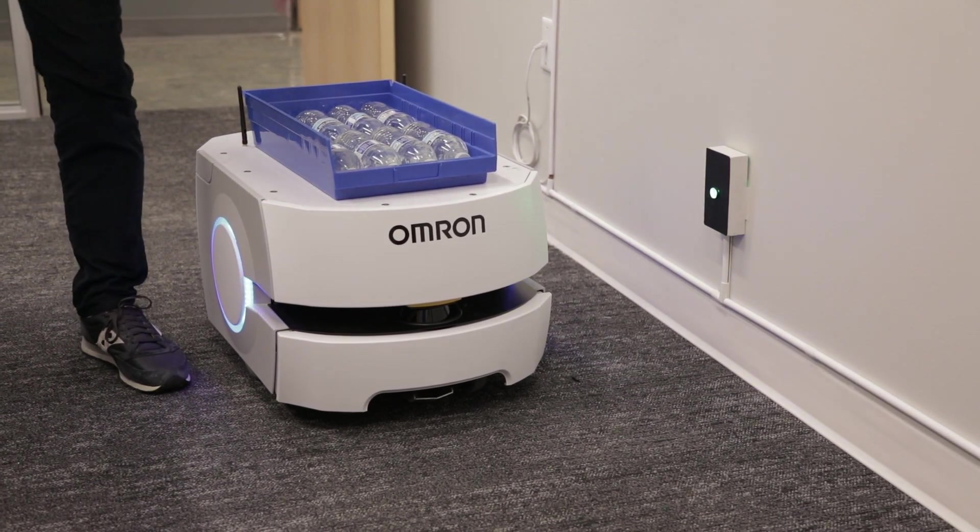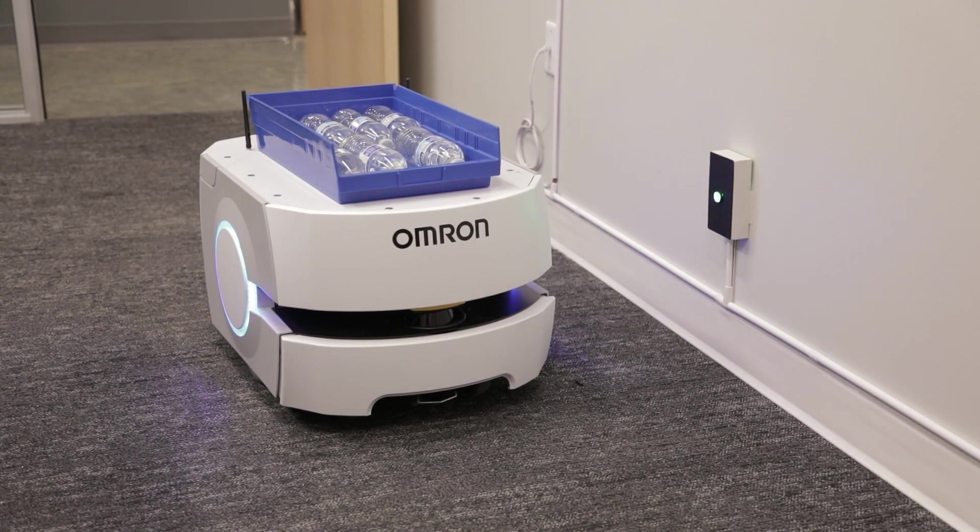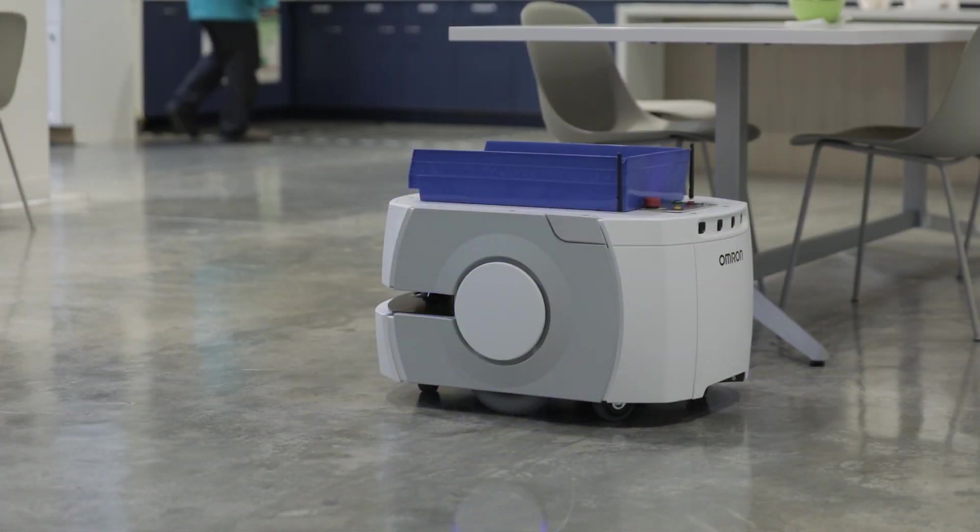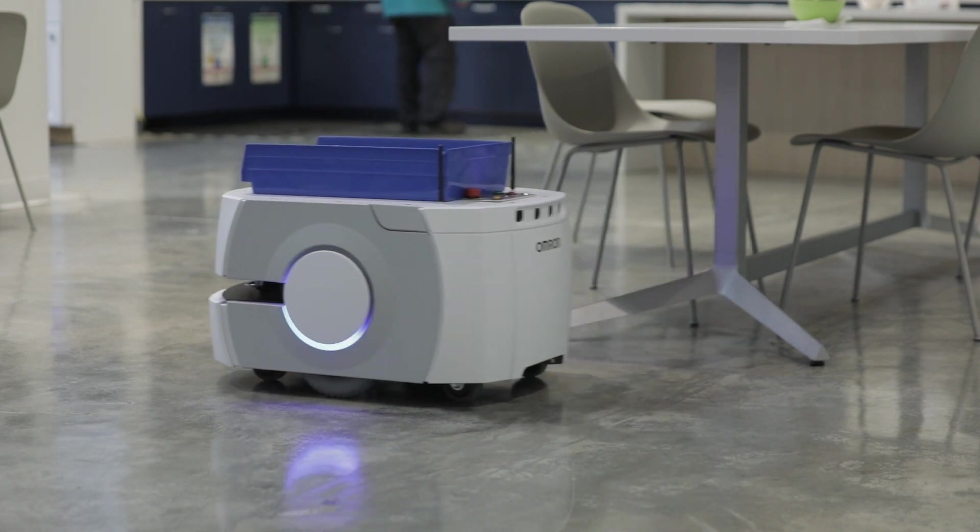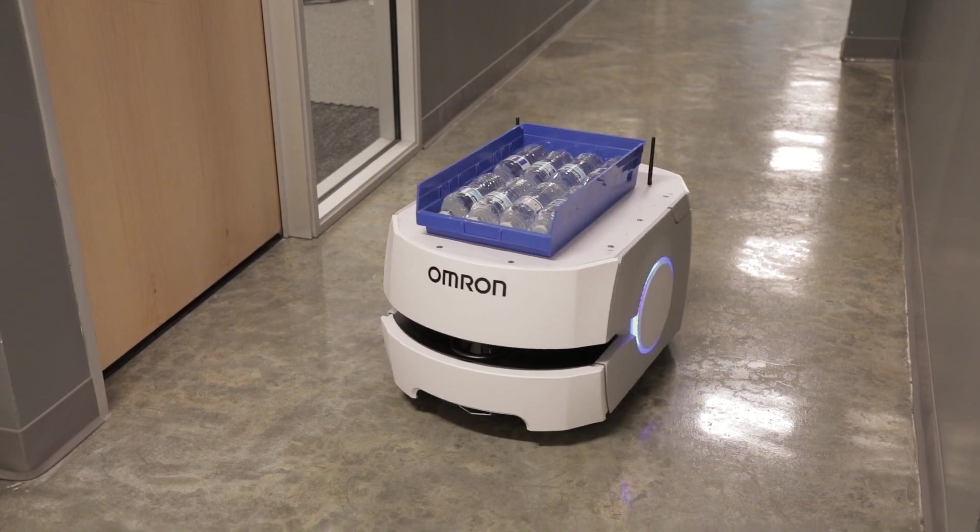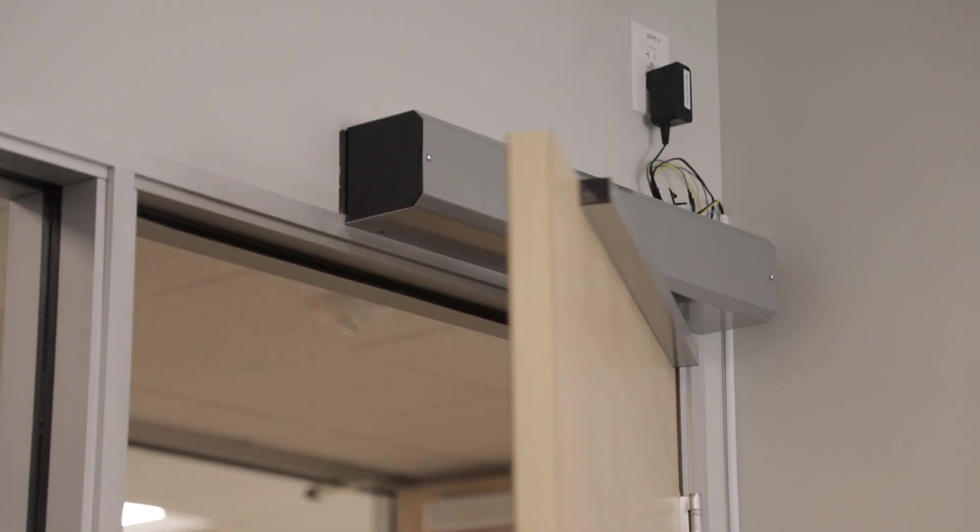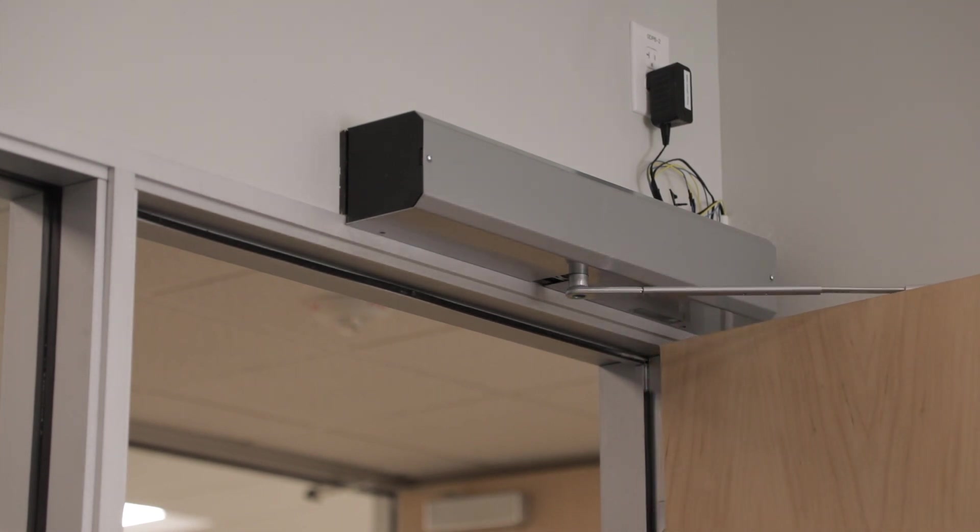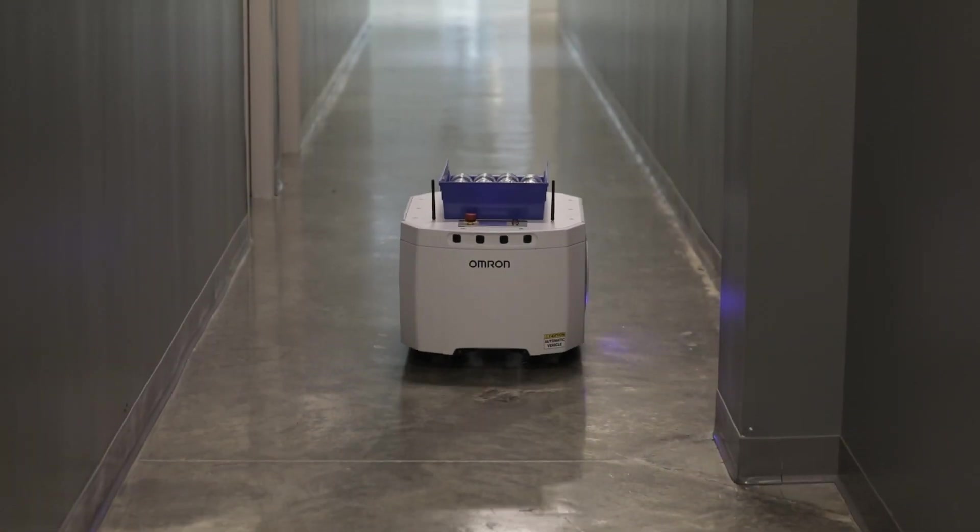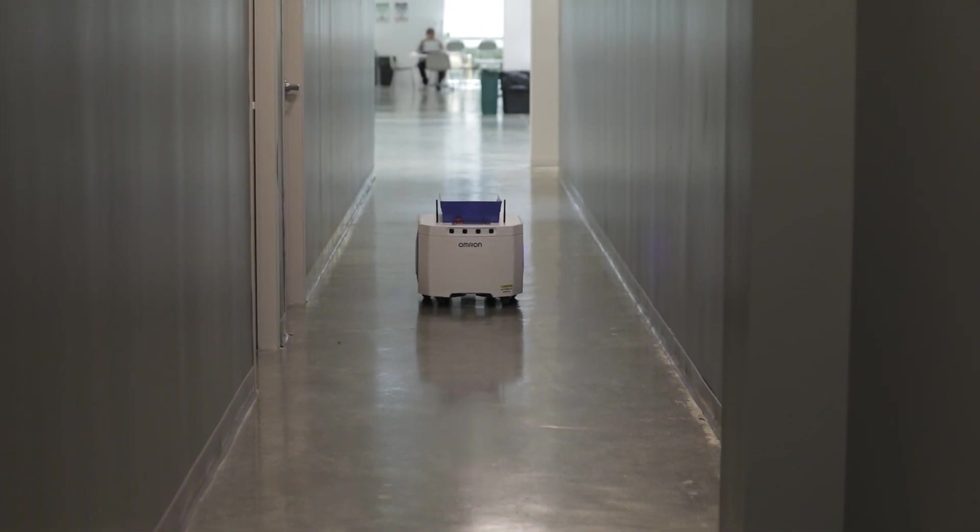This concludes the Mobile I.O. Box tutorial. The Mobile I.O. Box will enable you to easily set up an AMR application where you can call a mobile robot to pick up or drop off loads. It can be used to automatically open doors or control other industrial devices that are necessary for your AMR operation. We hope Omron's AMRs will be able to help with your flexible, autonomous material handling needs.